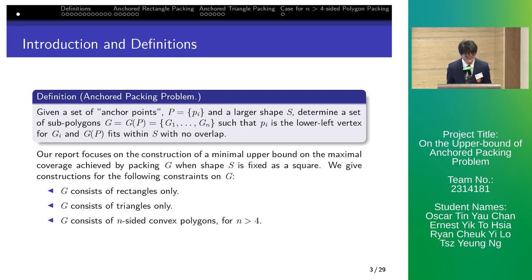The lower left anchored packing problem was previously explored by Demetrix and TOF by achieving constant coverage. Our report focuses on the minimal upper bound of coverage packing G with rectangles, triangles, and n-sided polygons with shape S being a square.